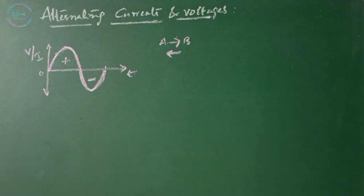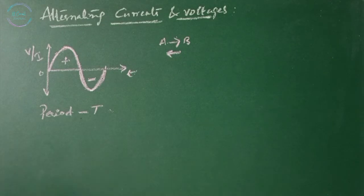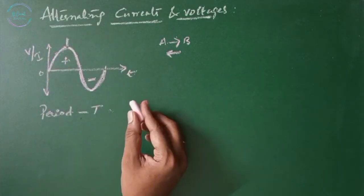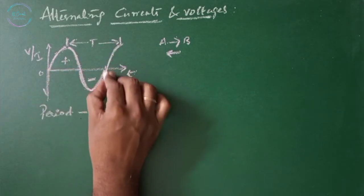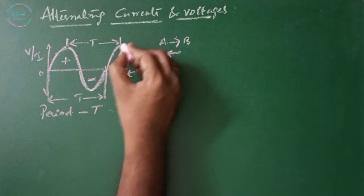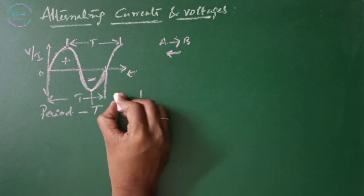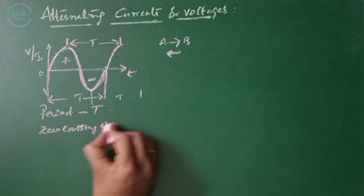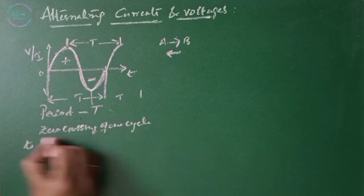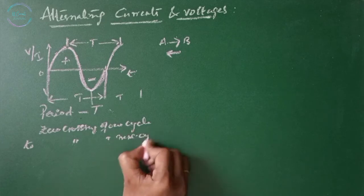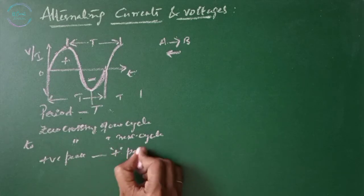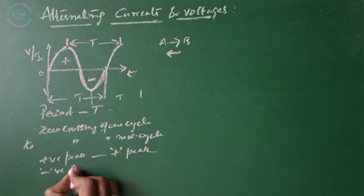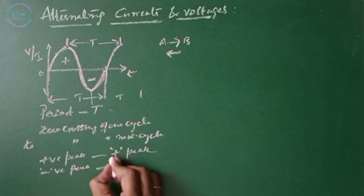The time taken for any wave to complete one full cycle is called the period. The period can be measured from maximum value to the next maximum value, from zero to zero, from negative max to negative max, from zero crossing of one cycle to the zero crossing of the next cycle, or from positive peak to next positive peak, or negative peak to next negative peak.